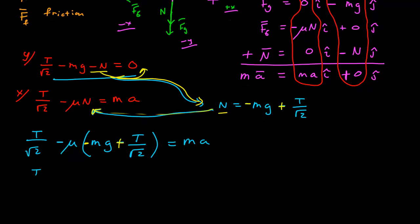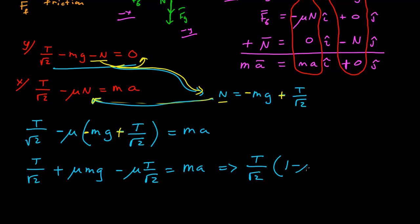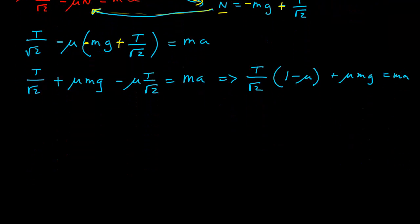T over the square root of 2 minus, then plus mu mg minus mu T over the square root of 2 equals ma. I'm gonna combine my terms here. Factor out T over the square root of 2 times (1 minus mu) plus mu mg equals ma. Then I divide by m and get my final relationship: a equals T over the square root of 2 m times (1 minus mu) plus mu g.